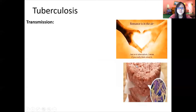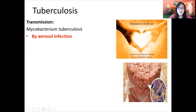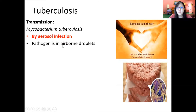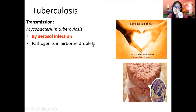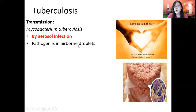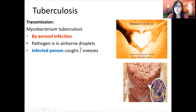How is it transmitted? Transmission is by aerosol infection, at least for Mycobacterium tuberculosis. Mycobacterium tuberculosis is not present just in the air — it is in airborne droplets. So it is not the air itself that carries the pathogen; it is the tiny microscopic water droplets in the air that carry the bacteria. In your exams, don't just write 'airborne' — it should be aerosol infection carried by airborne droplets. Droplets is the key word.